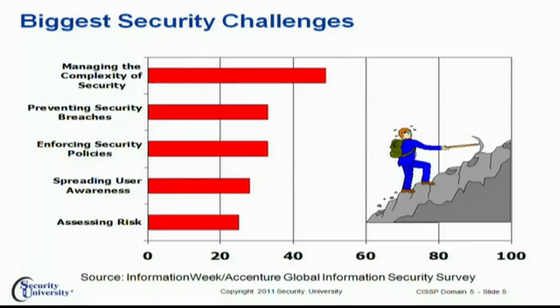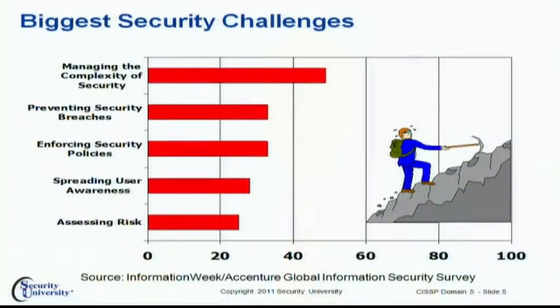One of the biggest challenges facing information security professionals and their senior management, such as the CIO of an organization, is that there are a lot of different things you have to do to have a good security program — as demonstrated by all the topics you need to know to attain a CISSP designation. The number one issue amongst security folks is managing the complexity of security, which exceeds the challenges of preventing security breaches, enforcing policies, spreading awareness, and assessing risk. We have this big collection of security controls — physical, administrative, and technical — and the challenge is making them all work together.